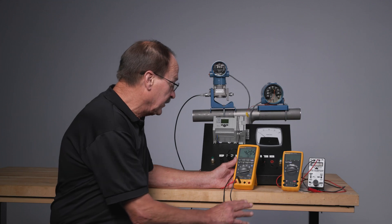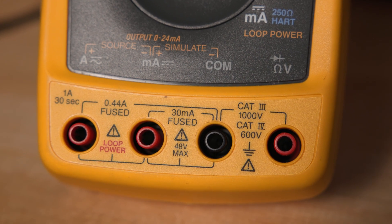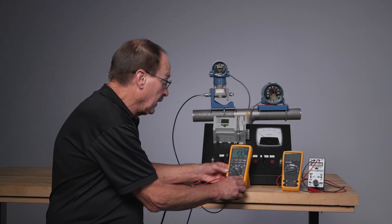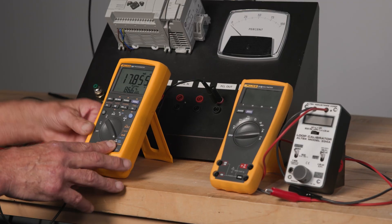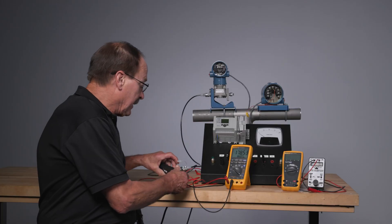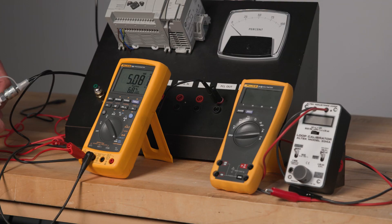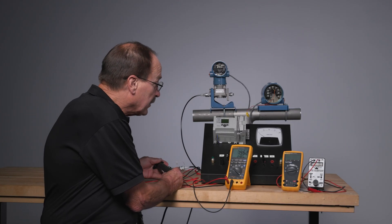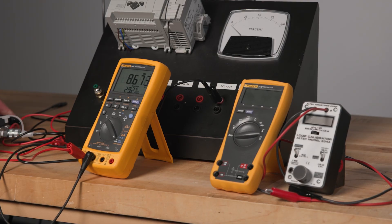One additional function for the loop calibrator is it has 24 volts of loop power that it can provide for powering a transmitter. So connected to loop power, the process meter can power a transmitter while measuring the milliamp signal it draws as the pressure changes. So as I change the pressure while testing this transmitter offline, I can power it with the 789, measure the milliamp signals while changing the pressure and testing the device.